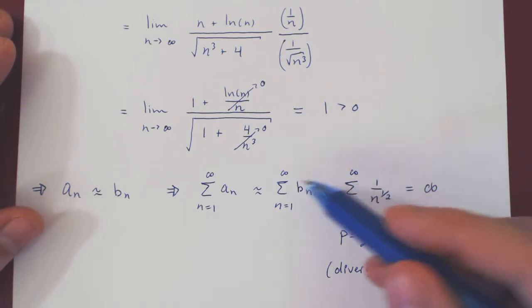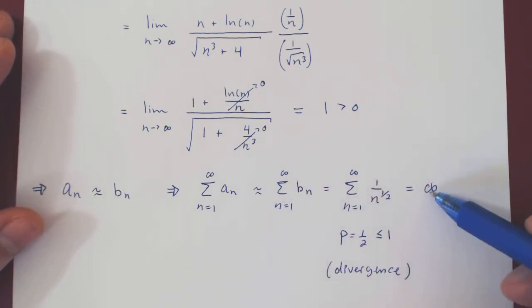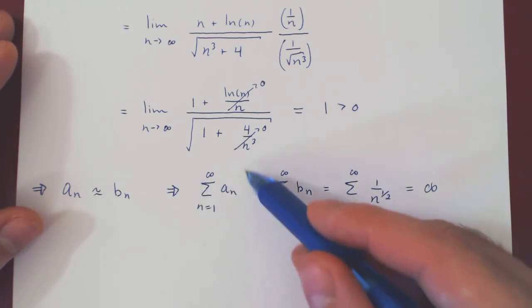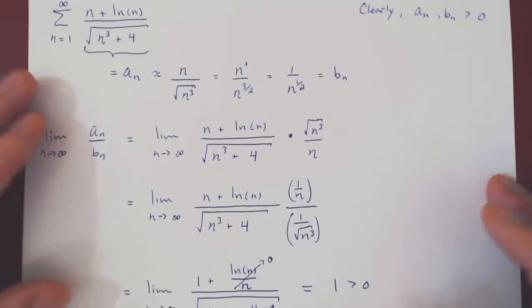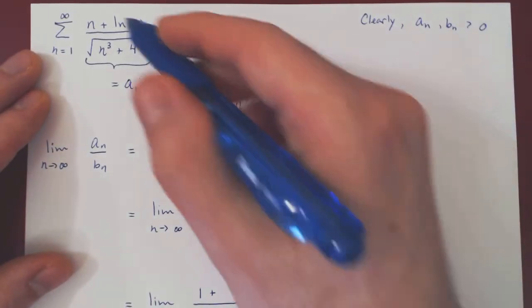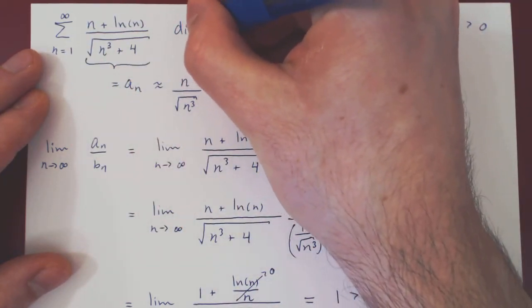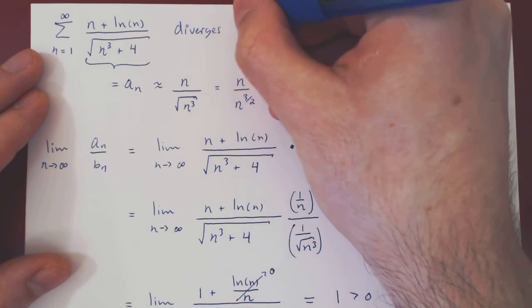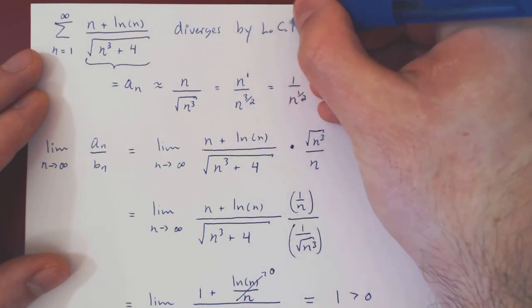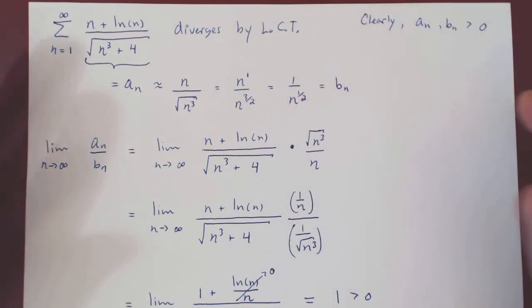So, because the new series diverges, the initial series diverges as well by the limit comparison test. And that is our conclusion, that the initial series diverges by the limit comparison test. And that's it.